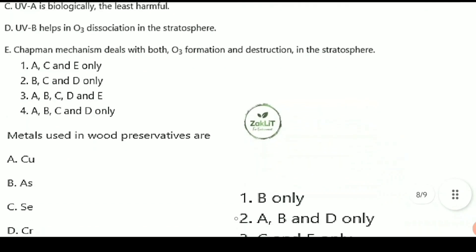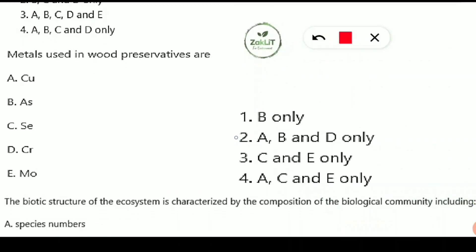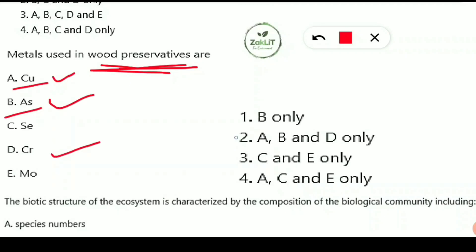The next question asks which metals are used in wood preservatives to protect wood from pest and insect attack for longer periods. The correct metals are copper (Cu), arsenic (As), and chromium (Cr) — options A, B, and D. Option 2, A, B, and D, is the correct answer.